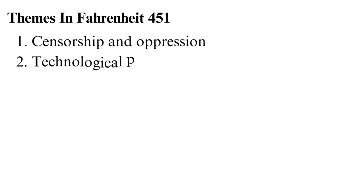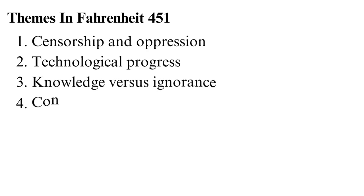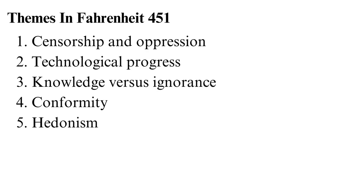Themes in Fahrenheit 451: 1. Censorship and oppression — in this society, people who read and store books are framed as criminals. Most people have low attention spans and are anti-intellectual and unpleasant because they have no access to books that would help them think. The lack of different ideas also promotes social cohesion, hence the government supports it, too.